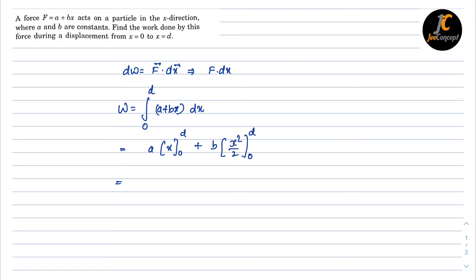Now putting the limits we will get Ad plus Bd square by 2. If we take d as a common so it will become d times A plus Bd by 2 joule. So this is the solution of this problem.